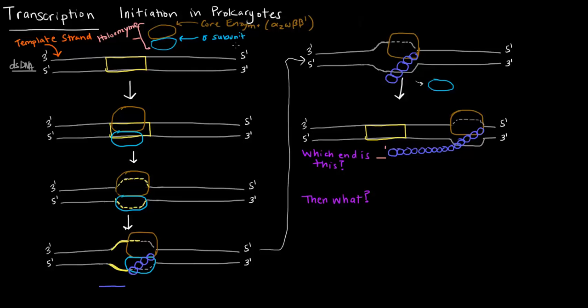Now if you recall, the sigma subunit's purpose is to help the core enzyme bind the promoter region of the DNA. So if we imagine this region here to be the promoter, the sigma subunit is going to help the core enzyme bind. When it binds, it forms this thing called the closed complex.